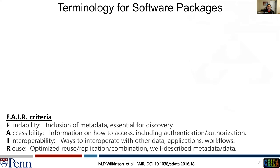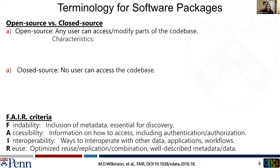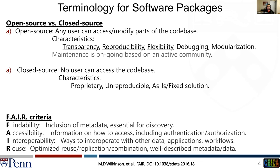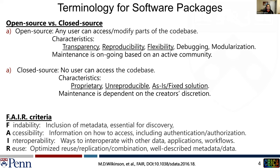Let me start by discussing some of the common terminology used when discussing software, starting with open and closed source. The major difference is that open source software allows modification of any part of the codebase, and its maintenance is based on active participation of the scientific community. Whenever we develop any computational tool, we keep the FAIR criteria in mind — findability, accessibility, interoperability, and reusability. This is the ethos around which our entire development is focused.